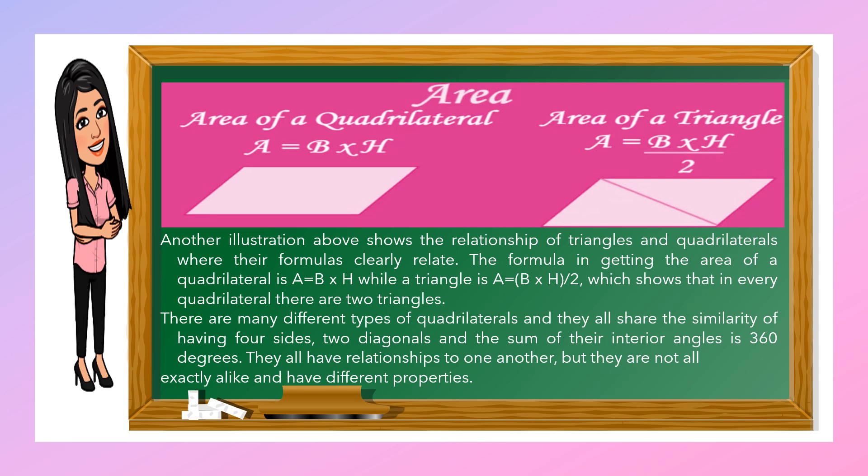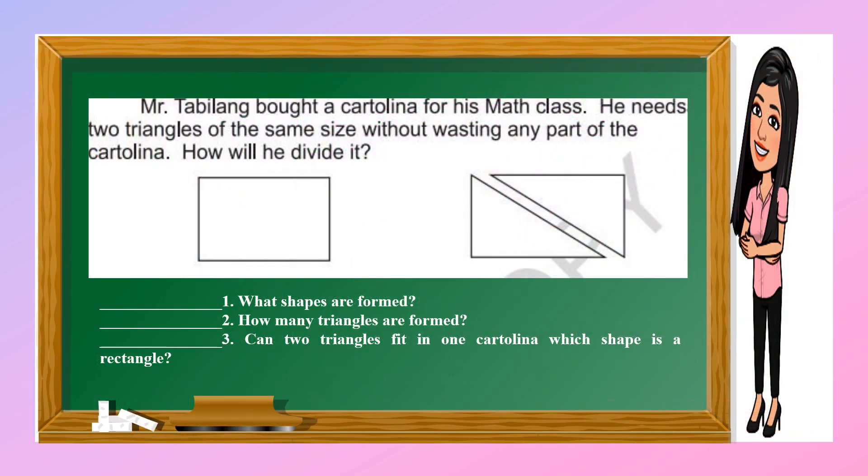There are many different types of quadrilaterals, and they all share the similarity of having four sides, two diagonals, and the sum of their interior angles is 360 degrees. They all have relationships to one another but are not all exactly alike and have different properties.